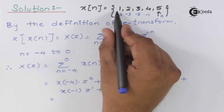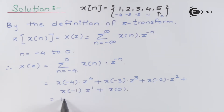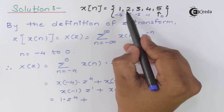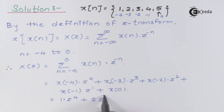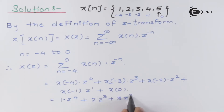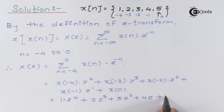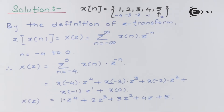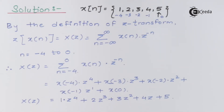So at minus four the amplitude is one, at minus three it is two, at minus two it is three, and so on. Multiplying each amplitude by the corresponding z to the power four, three, two, and one respectively gives us the final Z-transform X(z). We will then calculate the ROC of this function.